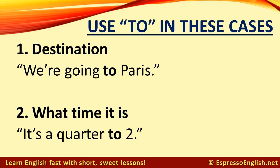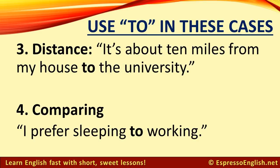Use 'to' for destination — for example, 'We're going to Paris.' Use 'to' when talking about what time it is, particularly when talking about minutes before an hour — for example, 'It's a quarter to two.' Use 'to' when talking about distance — for example, 'It's about ten miles from my house to the university.'